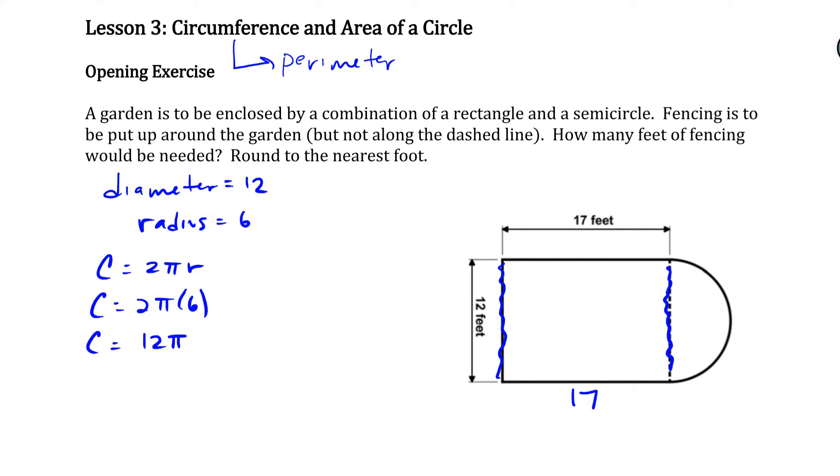Now if I do 12π in my calculator, remember to use the π button, don't actually use 3.14. I get a circumference of 37.699. Now since everything here is nearest foot, I'm going to round this to the nearest foot, so 38 feet. So now I know this outer edge is 38. So the perimeter of this entire garden is going to be 12 plus 17 plus 17 plus 38. So the perimeter of this garden is going to be 84. So you would need 84 feet of fencing to enclose this garden.